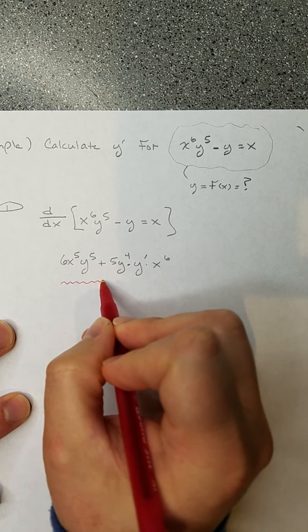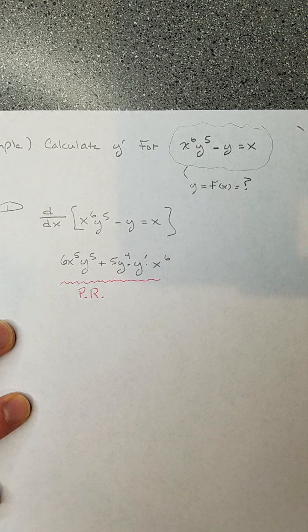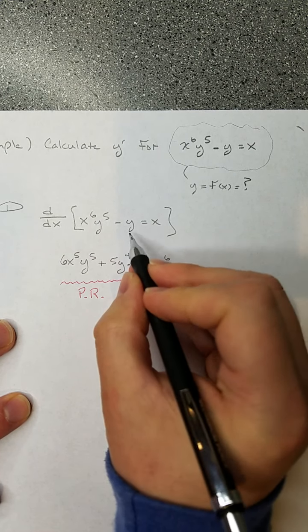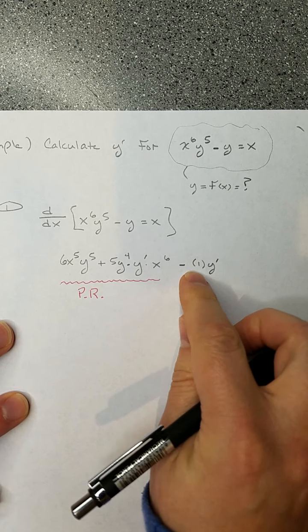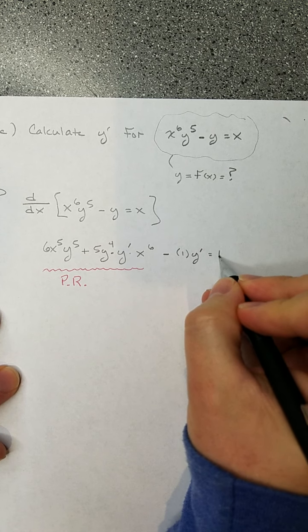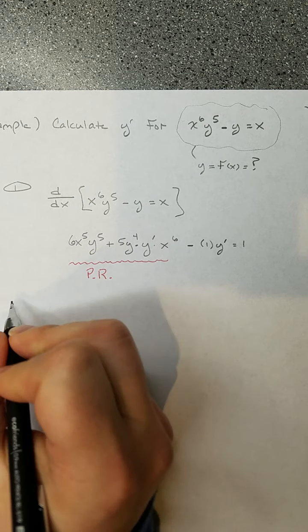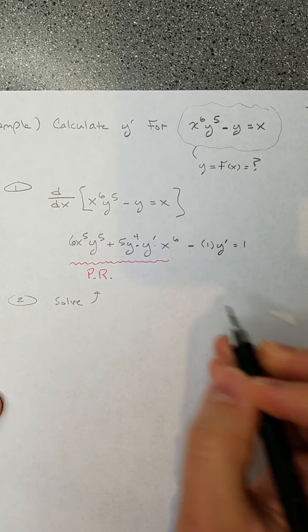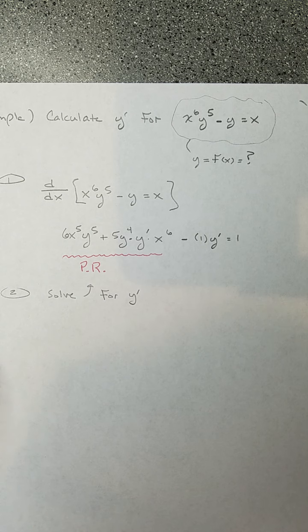Those two terms come from the product rule applied to x⁶ times y⁵. Then minus — carry that down — the derivative of y is 1, but all y derivatives are multiplied by y prime, so that gives minus y prime. And the derivative of x on the right-hand side is 1. So my step one result is: 6x⁵y⁵ plus 5y⁴ · y prime · x⁶ minus y prime equals 1.